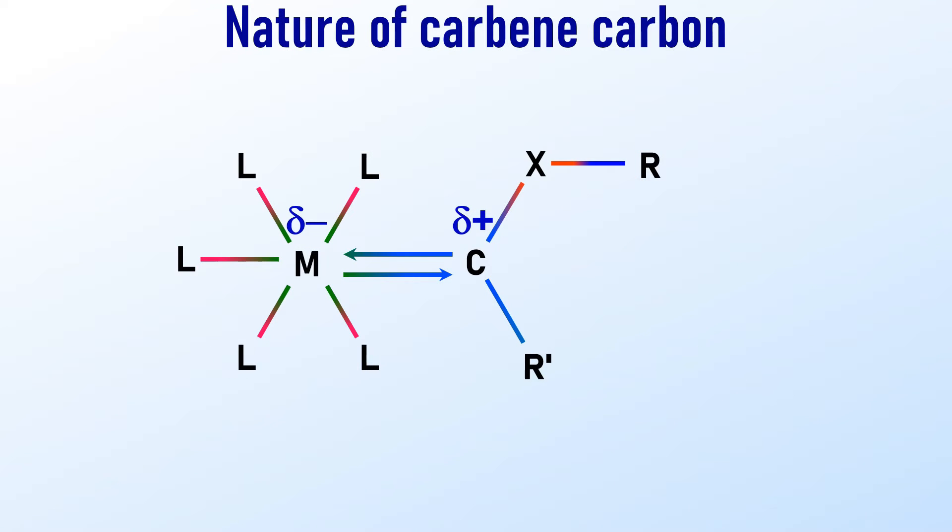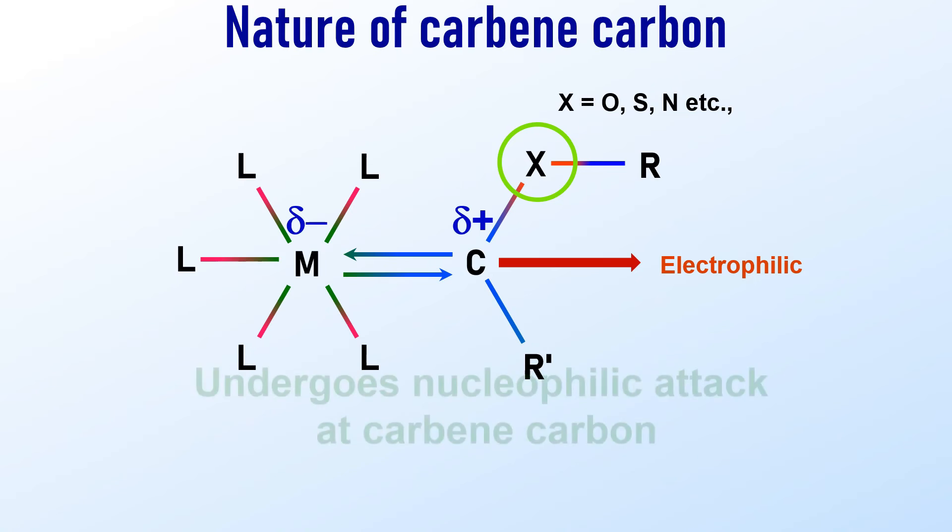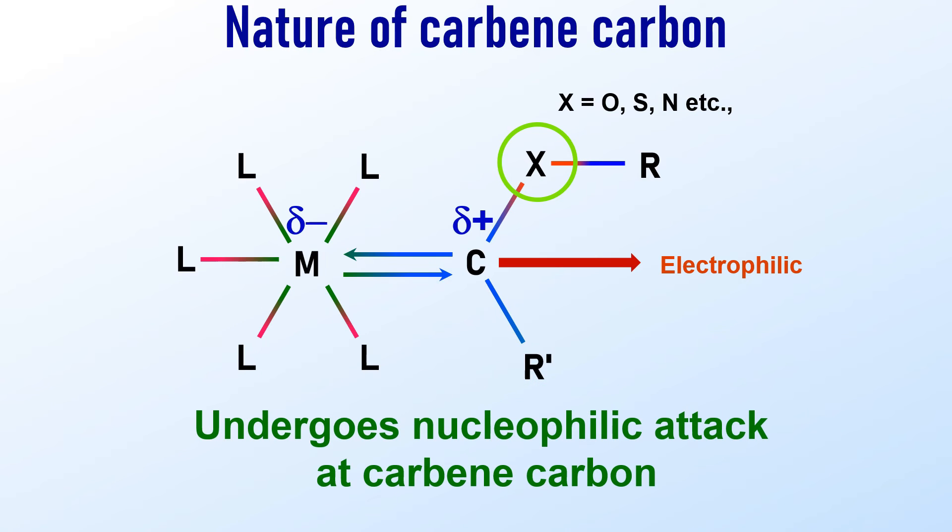The X, as shown in the Fischer carbene, is an electronegative atom like oxygen, sulfur, nitrogen, etc. As a result, the carbene carbon gets more positive charge. Therefore, it is electrophilic in nature and easily attacked by a nucleophile.